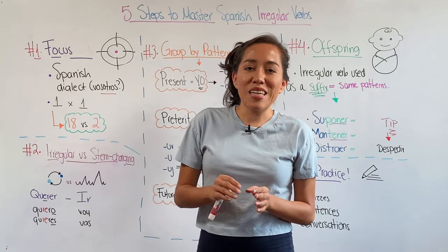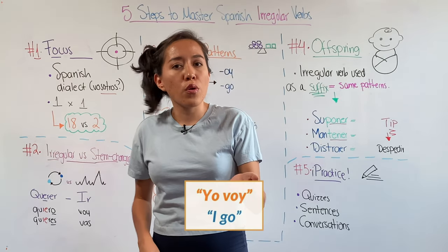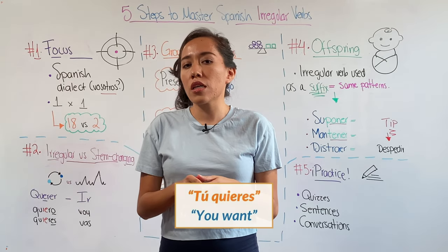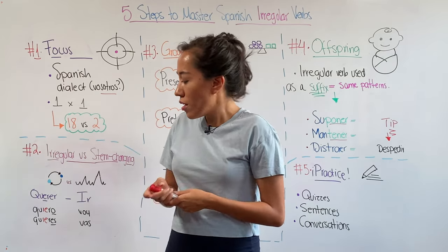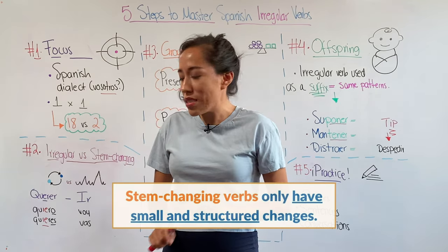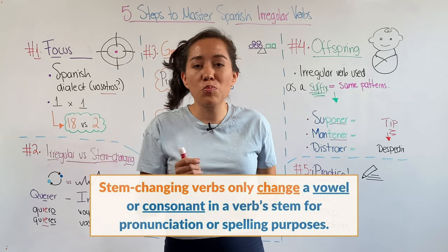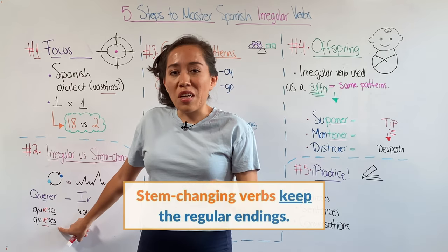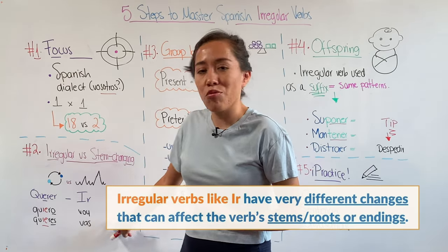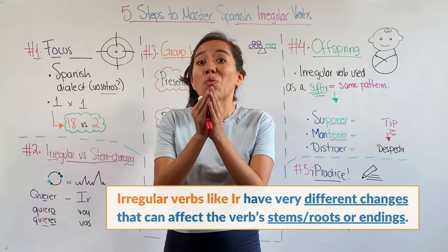Check this example: querer versus ir. Ir is wild — it seems like it doesn't follow any rules. Yo voy, tú vas, él va, nosotros vamos. What about querer? Yo quiero, tú quieres, nosotros queremos, ellos quieren. When we conjugate a stem-changing verb, we just do minor modifications — changing a vowel or a consonant for pronunciation or spelling purposes. However, we keep using the regular endings. So stem-changing verbs are not actually that scary. But if you look at ir, those are a lot of big changes. Don't worry about stem-changing verbs — worry about the irregular ones.